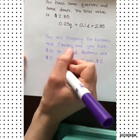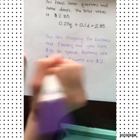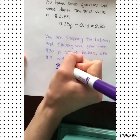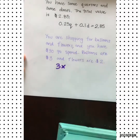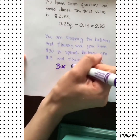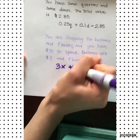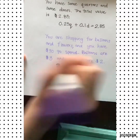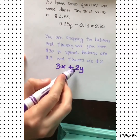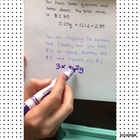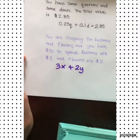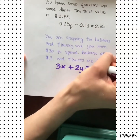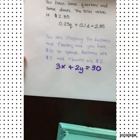We have balloons at $3 each, so let's call the number of balloons we buy X. And the number of flowers we buy will be Y. Flowers are $2 each, so we do 2 times Y. All together, we want to spend $30, giving us 3X plus 2Y equals 30.